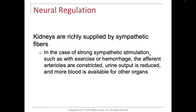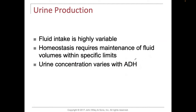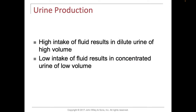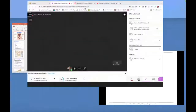In terms of neural regulation, the kidney is supplied by the sympathetics. In cases of strong sympathetic stimulation — like with exercise, or if someone is shot or stabbed and bleeding — the afferent arterioles get constricted, urinary output is reduced, meaning more blood is available for other organs for survival. Fluid intake is highly variable, and homeostasis requires maintaining fluid volumes within specific limits. Urine concentration also varies with anti-diuretic hormones — high fluid intake results in dilute urine of high volume, and low fluid intake results in very concentrated urine of low volume.